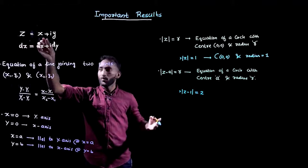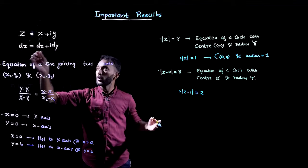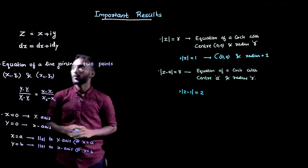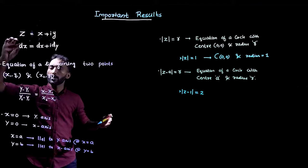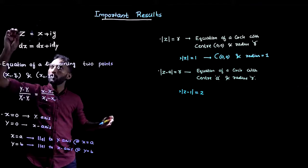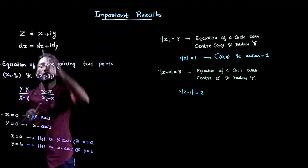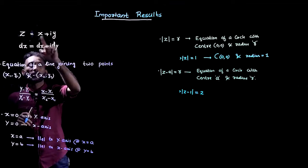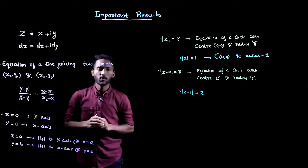If z equals x plus i·y, then dz will always be equal to dx plus i·dy. You should remember this result. If you add a 'd' to the left side of z, then you just substitute d for x and y to get dx plus i·dy. So you should remember: dz is equal to dx plus i·dy — a very important result.